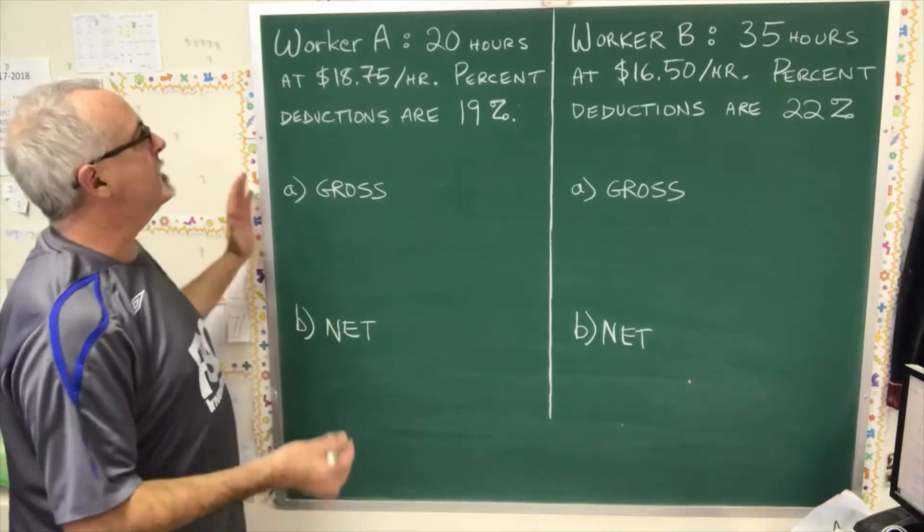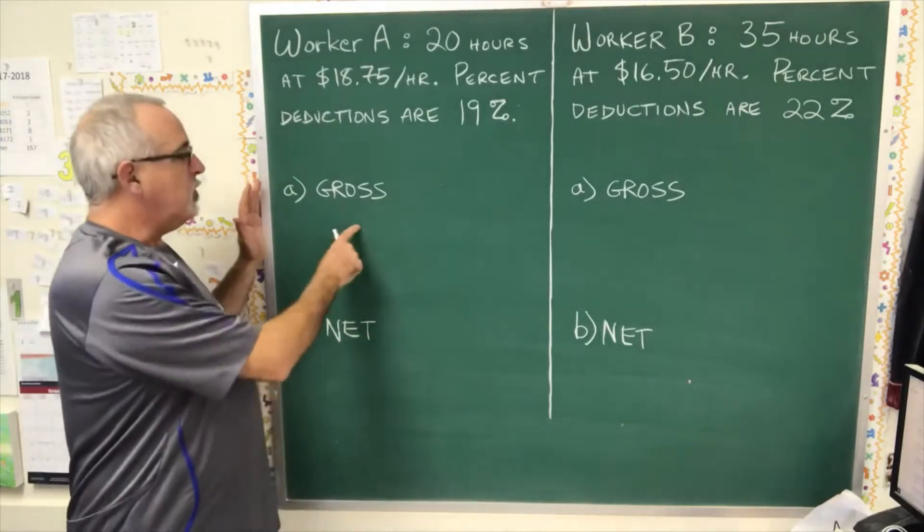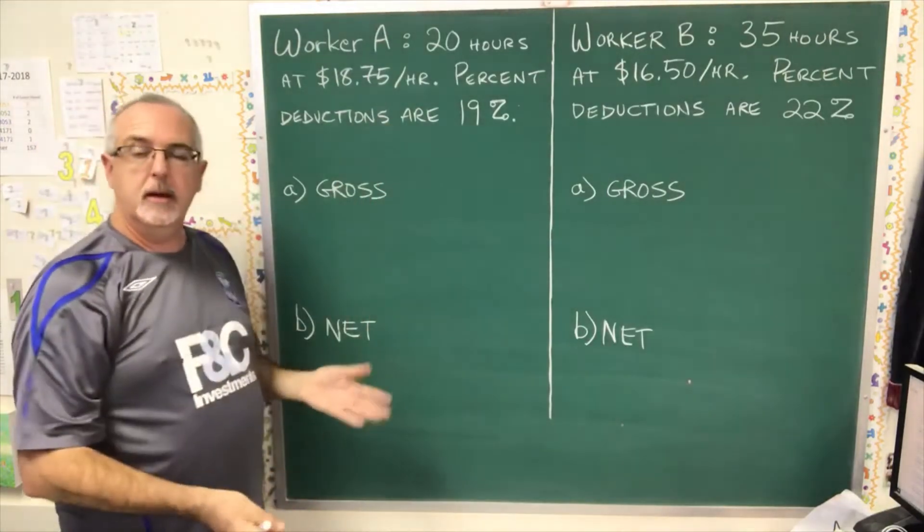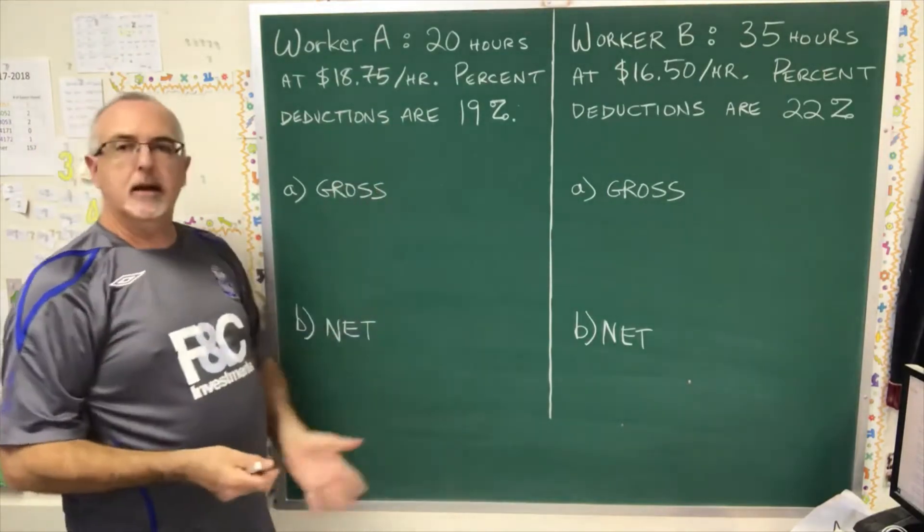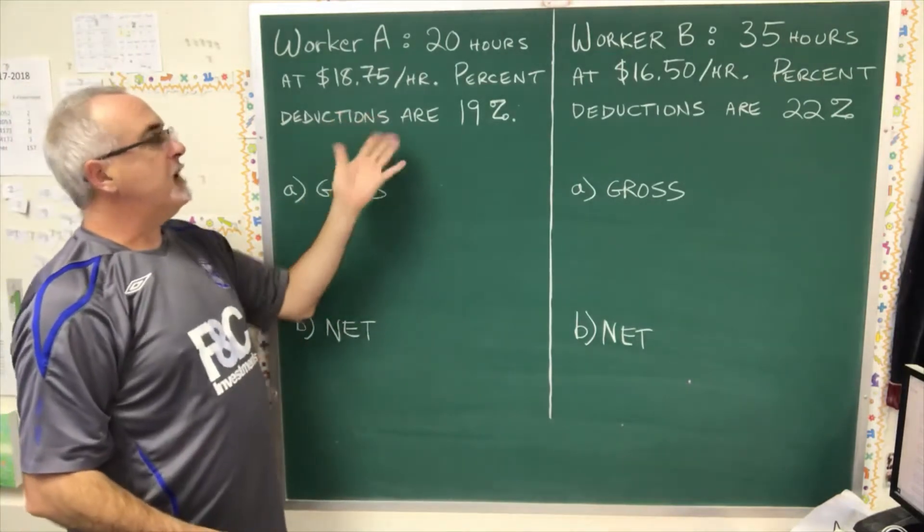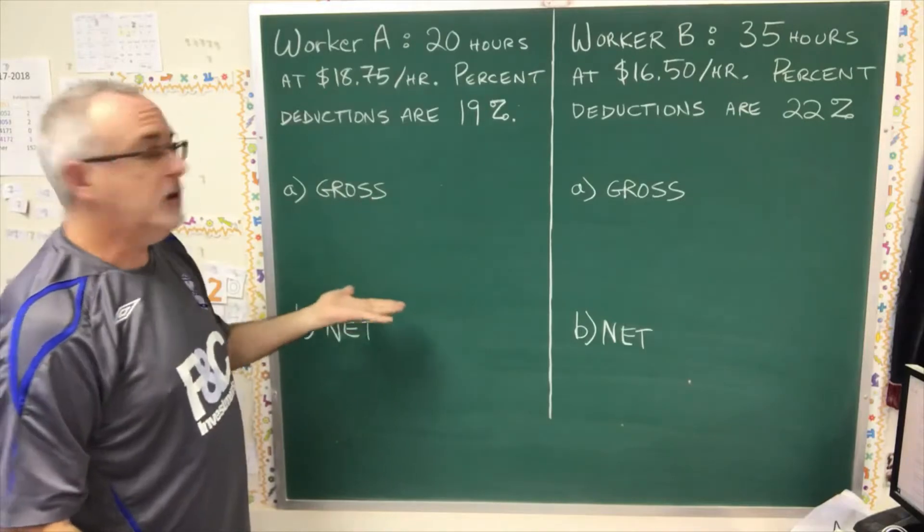Today's Daily Dose of Math is examples of calculating gross pay and net pay when you know the number of hours worked, the hourly wage, and the percent deductions. For gross pay, we just need the number of hours worked and the hourly wage, and we get it with a multiplication.